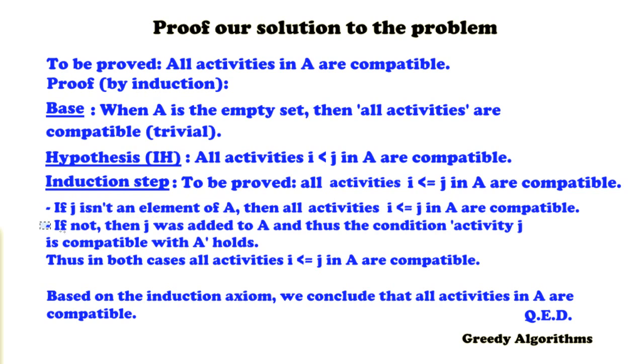And if j is added, in the second case, then j was added to A because the condition holds that activity j is compatible with A. So if that holds, then it should have been added. So it is added, so the condition must hold. And because in these two cases A is still compatible, all activities including j in A are still compatible. So the induction step holds and the base case holds. Based on the induction axiom, we can conclude that all activities in A are compatible. And that's what we wanted to prove. QED.